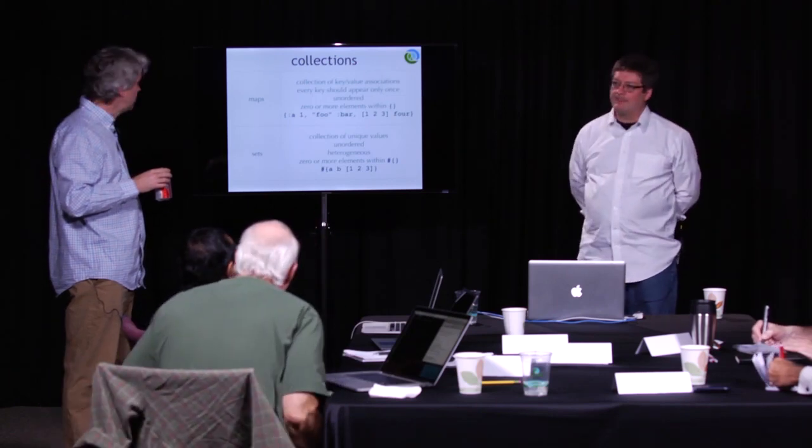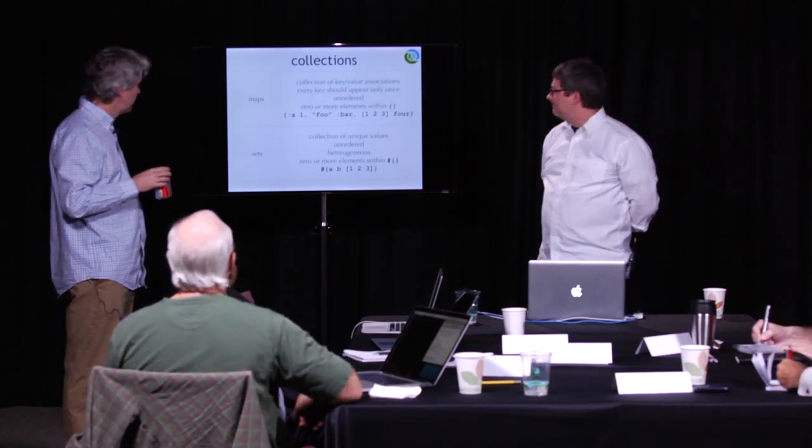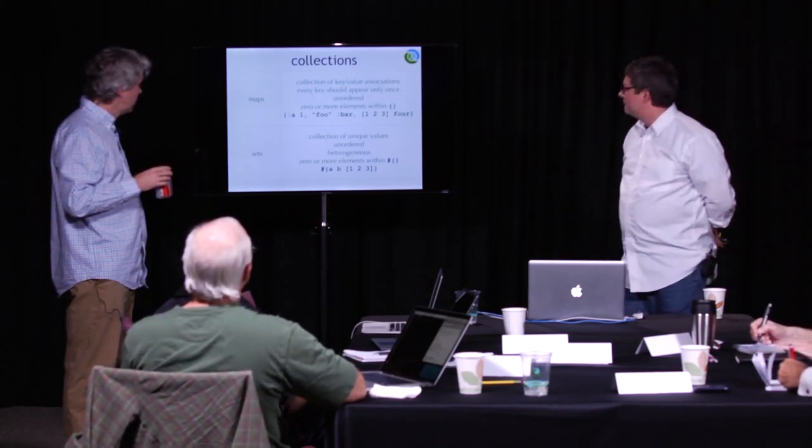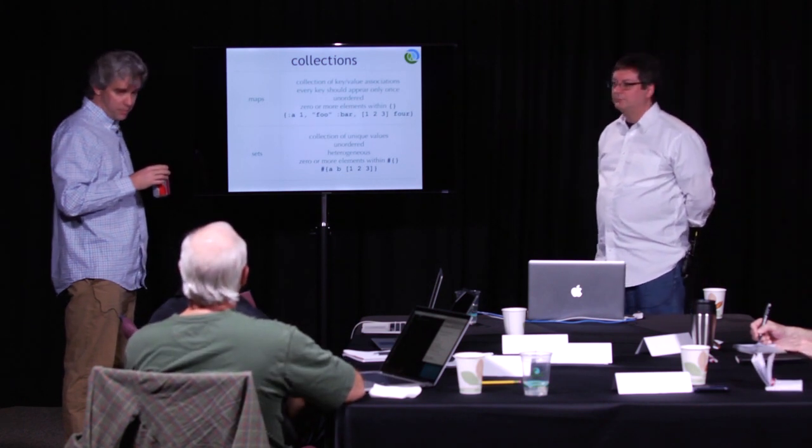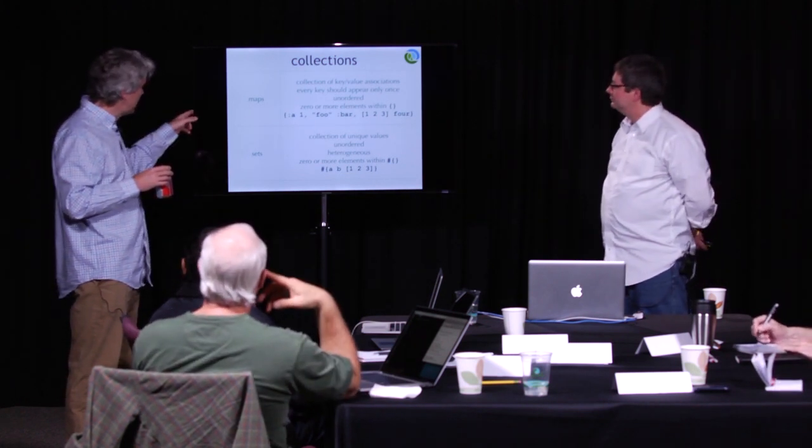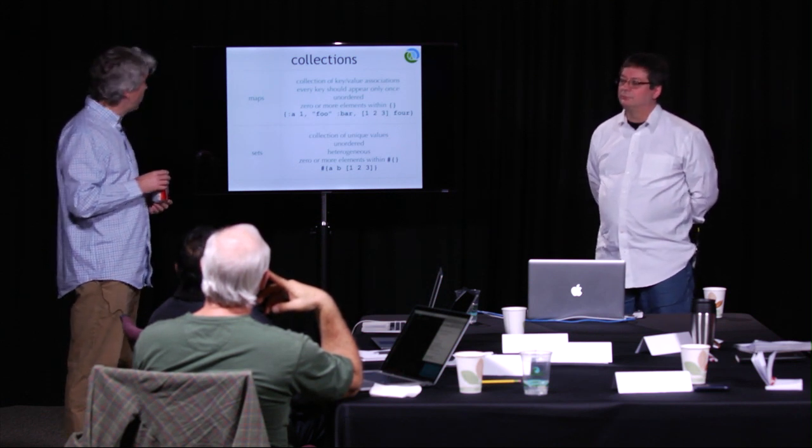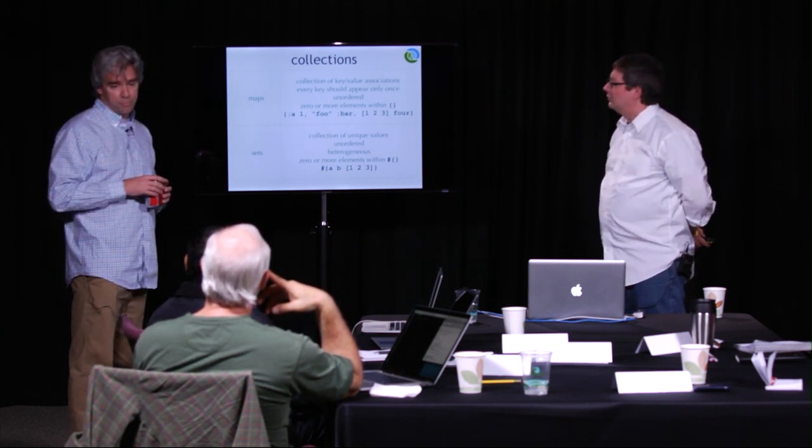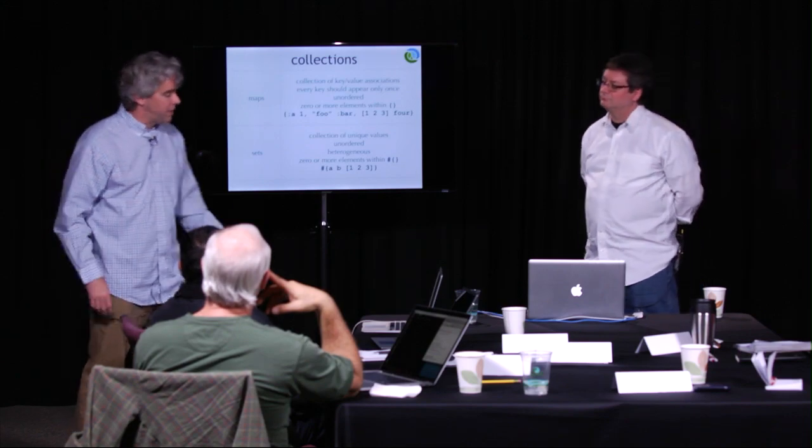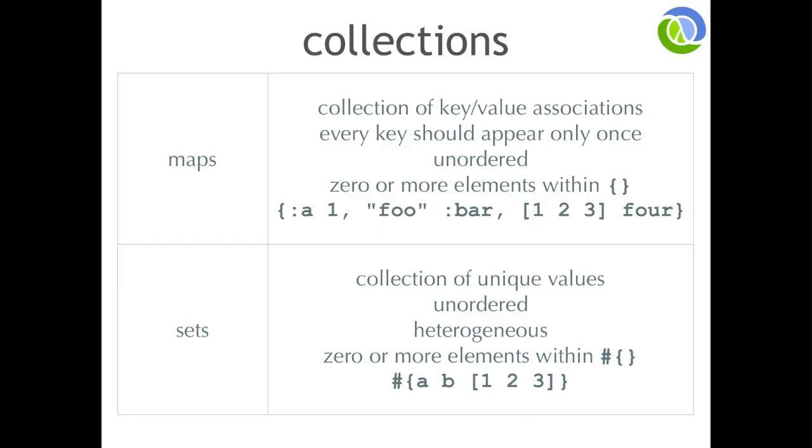That being said, it would be very unusual to have a map that had a vector as a key in the map, which is what you see right here. But there's nothing in the language in EDN that says what the rules are about how you're going to compose these things. That's left up to you. So which one is the key and which one is the value? The first one is the key and the second is the value. So the keyword a points to one. The string foo points to the keyword bar. The vector one, two, three points to the symbol four. And that is a very unusual kind of data structure, but it does show how heterogeneous it is. And of course we have sets as well. Collections of unique values, unordered, heterogeneous, zero or more elements within a pound sign and curly braces.